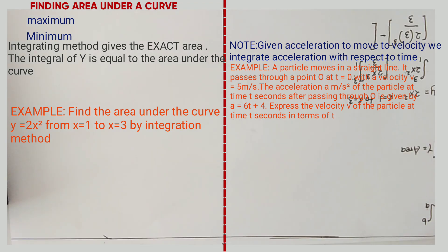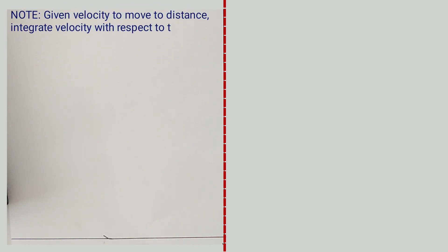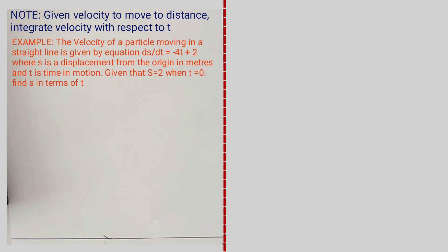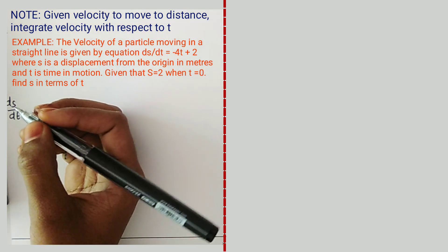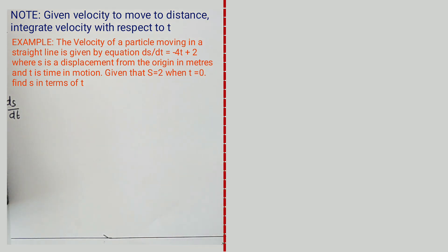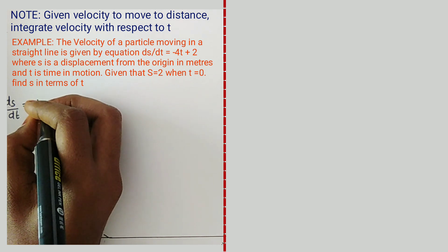Next we look at distance. When we want to find distance, we integrate velocity. We integrate V with respect to time to get distance S. An example says: the velocity of a particle moving in a straight line is given by ds/dt = −4t + 2, where S is displacement from the origin in meters and t is time. Given that S = 2 when t = 0, find S in terms of t.